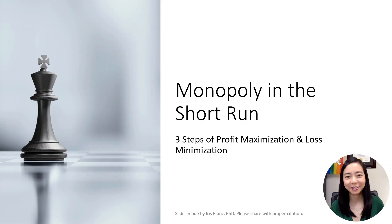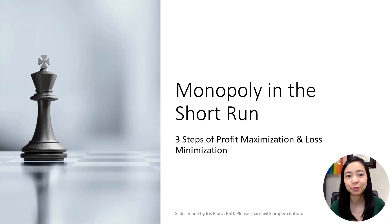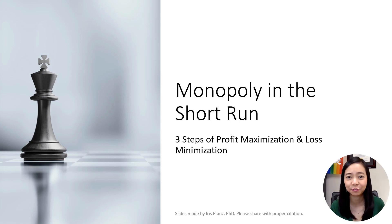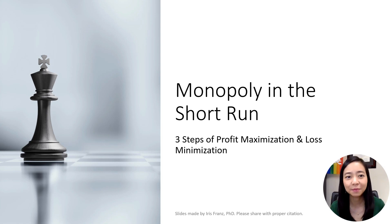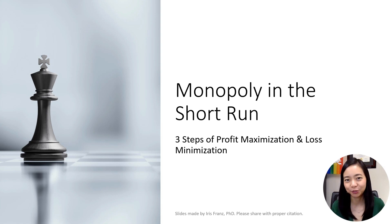Hello everyone, Iris Franz here. Today we will learn about the three steps to find the profit maximizing quantity and price for monopoly in the short run, given the demand curve, marginal revenue curve, and marginal cost curve.